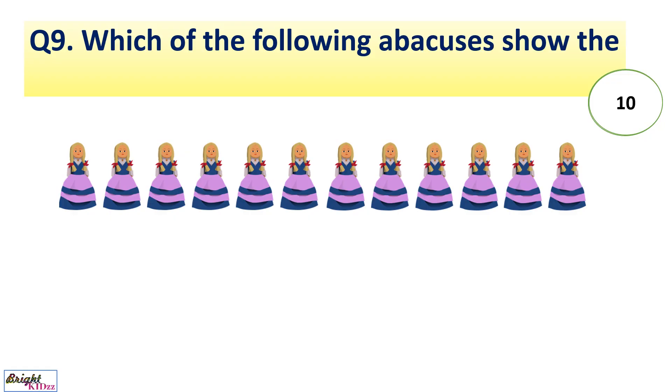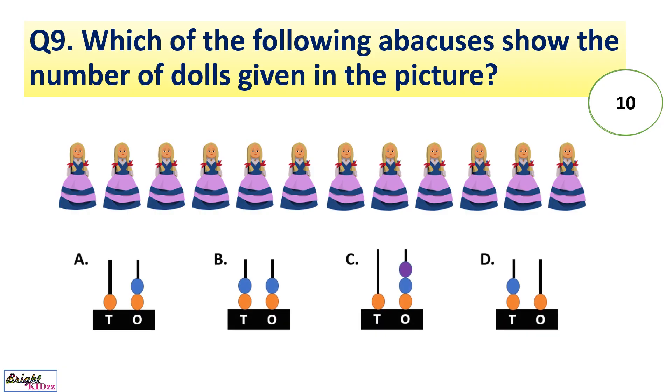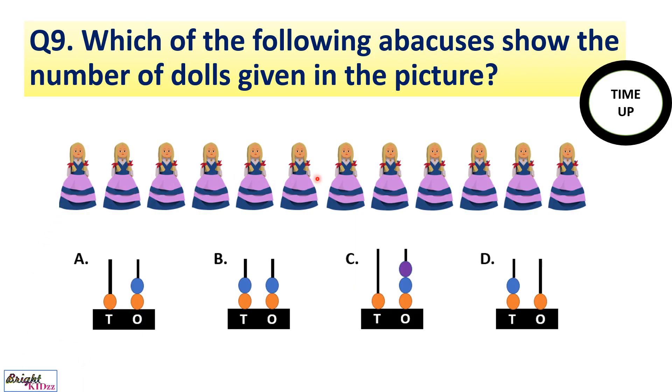Which of the following abacus show the number of dolls given in the picture? We need to add the number of dolls and match with the abacus. Here we will count 1, 2, 3, 4, 5, 6, 7, 8, 9, 10, 11, 12 dolls are there. So abacus A is showing 12 number on abacus.